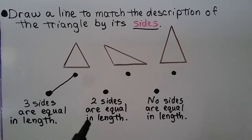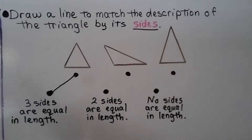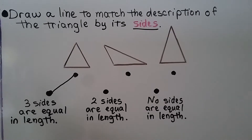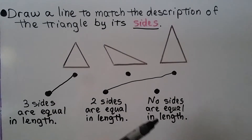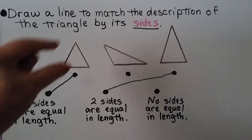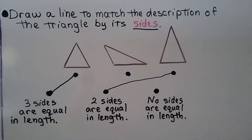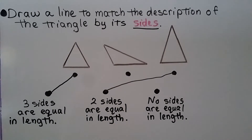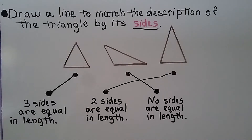For the remaining triangles, if it's hard to tell, we can look at the other one first. If you said two sides are equal in length for one of them, you're right, and we can connect that dot. The last triangle has three different side lengths — this side is shorter than this one, and that one is a lot longer — so it has no sides equal in length. We can also take a ruler and measure them.